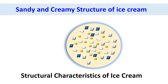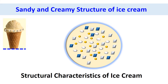Microstructure leads to the acceptance of desired texture and mouthfeel during mastication, which is the key to the acceptance of final product quality and is appreciated by the consumer. We can discuss this aspect by considering the example of sandiness and creaminess of ice cream.